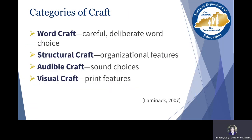When we think about writer's craft, there are four basic categories. We have word craft, which is that careful, deliberate word choice; structural craft, which involves looking at organizational features and structural choices that writers make; audible craft, which are the sound choices; and visual craft, which are the print features — what you can actually see on the page.